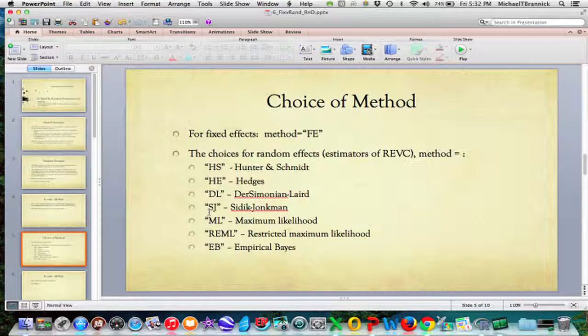DL is Dersimonian and Laird. SJ is Sidik and Jonkman. Sorry guys, I'm not sure how to pronounce that. ML is for maximum likelihood. REML is for restricted maximum likelihood. And EB is for empirical Bayes. So you can pick one of these.